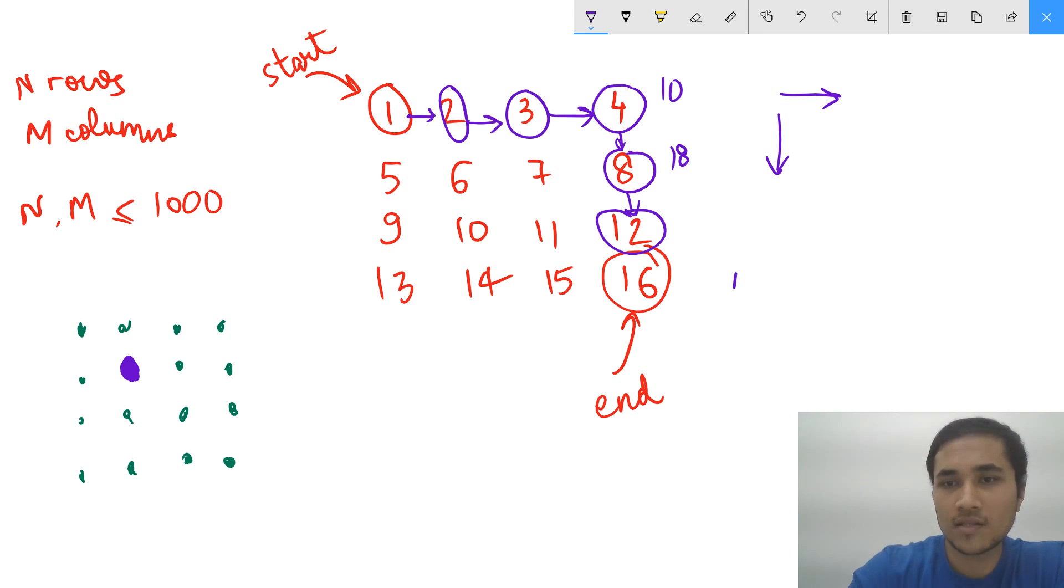The sum path is 46 for this path. There can be a couple of other options like from 1 we can go 5, then 6, then 7, then 11, then 15 and 16. Each path will have a sum associated with it. The problem talks about finding the maximum sum that you can obtain by traversing from the starting to the ending. This is the question and if you're not good in dynamic programming or have just started with it, it might be a little bit scary for you.